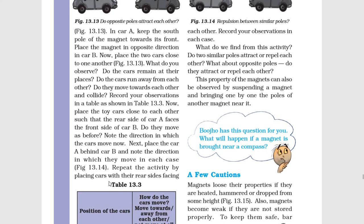Repeat the activity by placing cars with their rear sides facing each other and record your observations in each case. What do we find from this activity? Do two similar poles attract or repel each other? What about opposite poles - do they attract or repel each other?